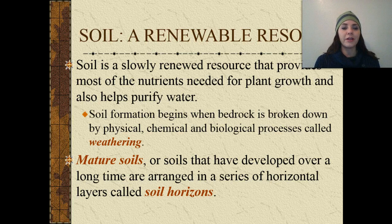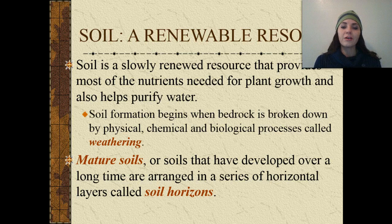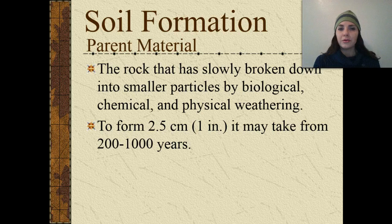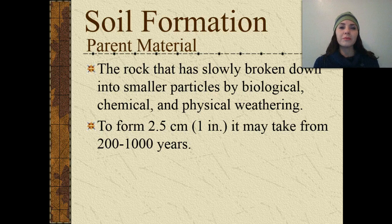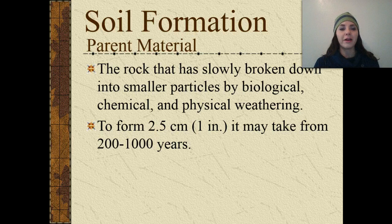Soil formation begins when bedrock is broken down by physical, chemical, and biological processes called weathering. Mature soils that have developed over a long time are arranged in horizontal layers called soil horizons. The parent material is a rock that's been slowly broken down into smaller particles by biological, chemical, and physical weathering. It forms about 2.5 centimeters of soil in 200 to 1,000 years, so soil is replenished in a very slow manner.